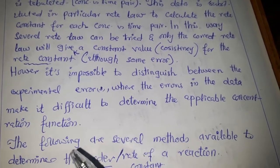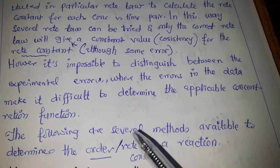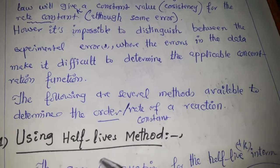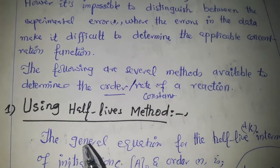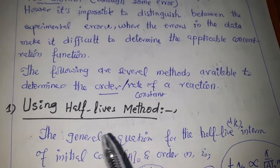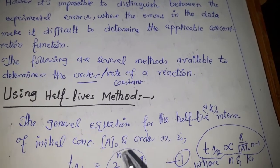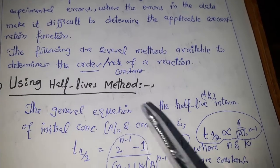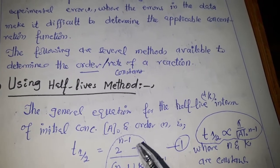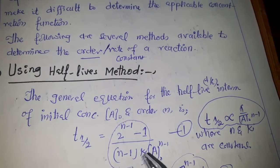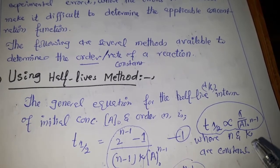The following are several methods available to determine the order or rate constant of a particular reaction. The first one is the half-life method. As the name indicates, we find the general equation for half-life in terms of initial concentration and order — already derived in the introductory chapter — that is: t½ = (2^(n−1) − 1) / ((n−1) · k · [A₀]^(n−1)), where n and k are constants.